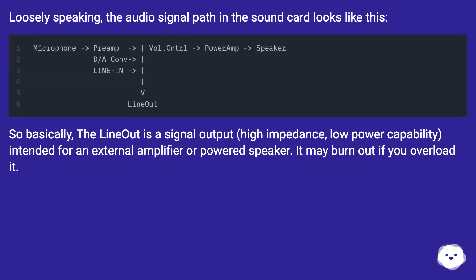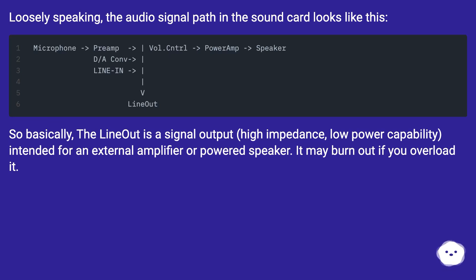Loosely speaking, the audio signal path in the sound card looks like this. Basically, the line-out is a signal output — high impedance, low power capability — intended for an external amplifier or powered speaker.